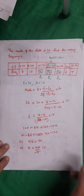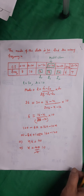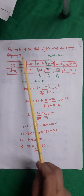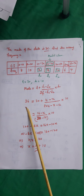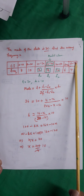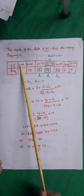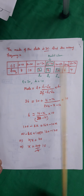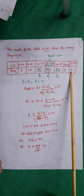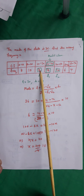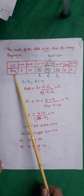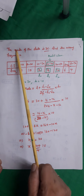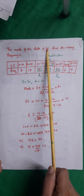Today we will learn some applications of this formula. If mode of the data is 36, find the missing frequency X. The chart is given here with class intervals and frequencies, where one of the frequencies is missing. We first need to find the modal class because mode of the data is given.